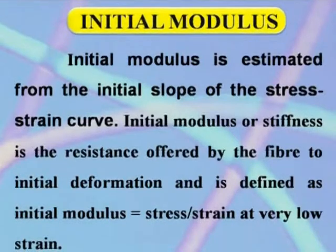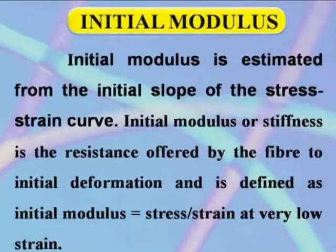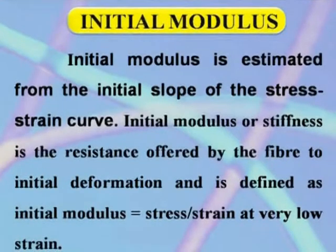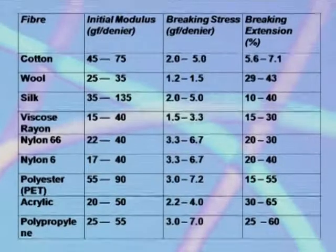Initial modulus is estimated from the initial slope of the stress-strain curve. Initial modulus, or stiffness, is the resistance offered by the fiber to the initial deformation and is defined as initial modulus, which is equal to stress over strain at very low strain. A summary of mechanical parameters of different fibers is given.